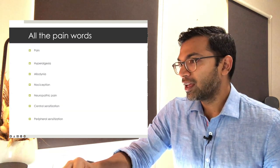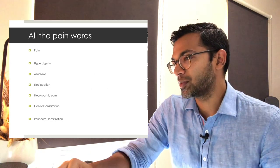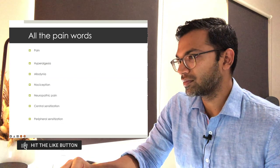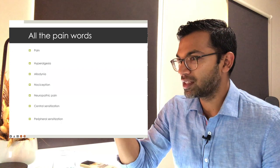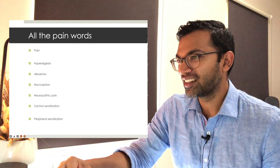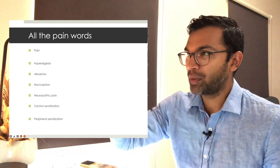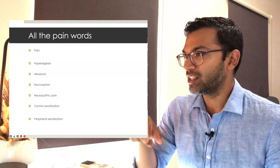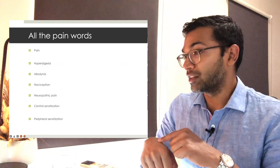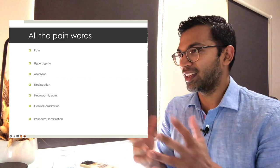Allodynia is pain from a normally non-painful stimulus — like touching a bruise, which isn't normally painful but causes a lot of pain. Hyperalgesia is when a painful stimulus is now more painful than expected — the same bruise with a pin would hurt far more than on normal skin. Nociception is simply the nerve receptors being activated — the sensation itself.